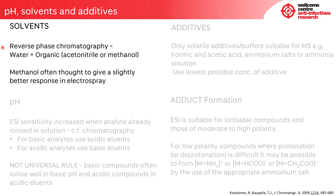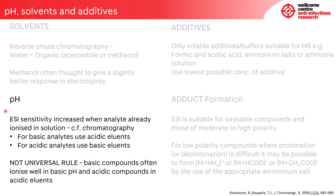In DMPK and medicinal chemistry, the majority of analysis is done using reverse phase chromatography, using water and either acetonitrile or methanol as the organic eluent. In mass spec terms, there's relatively little difference between using acetonitrile or methanol, although a number of people think that methanol gives a slightly higher response in electrospray. Looking at the effect of pH on electrospray response, sensitivity usually increases when an analyte is already ionized in solution. So as a rule of thumb, basic analytes use acidic eluents and acidic analytes use basic eluents, though this is not a universal rule and compounds often ionize well outside these guidelines.